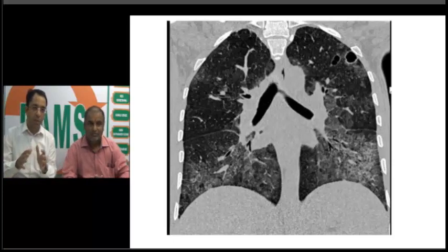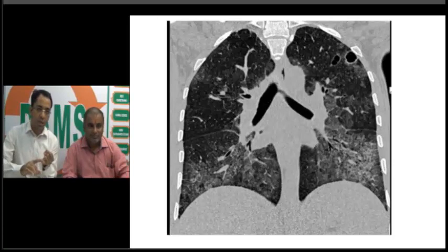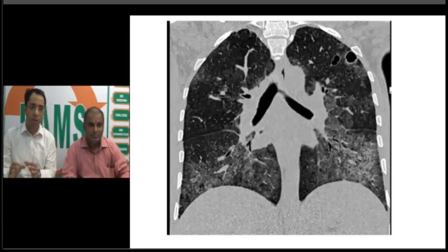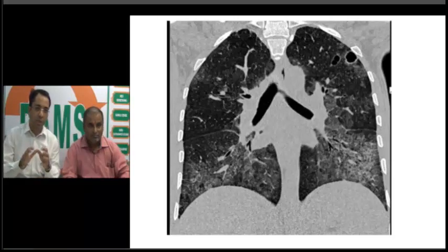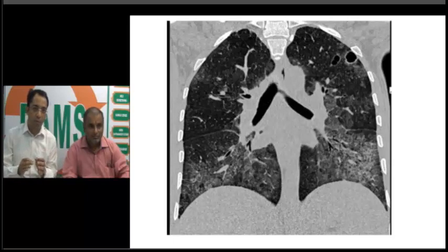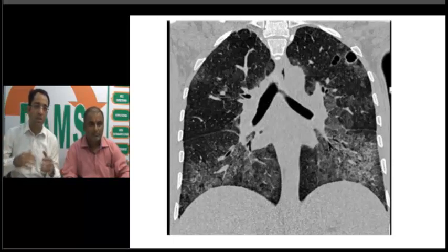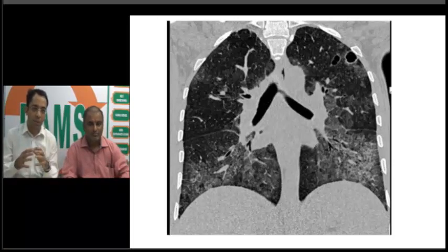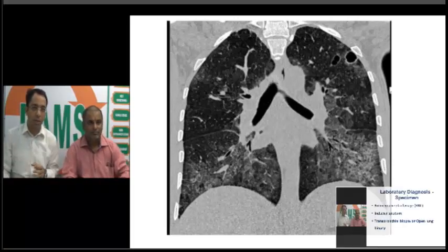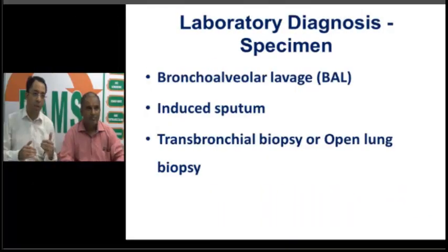A few important radiological pearls: lymphadenopathy and pleural effusion are particularly uncommon in PCP pneumonia. This patient shows lower lobe predominance. However, if the patient was on prophylactic aerosolized therapy, the distribution pattern might be reversed. I will now ask Dr. Surya to talk about the lab findings.